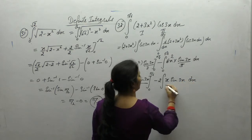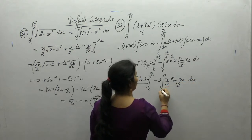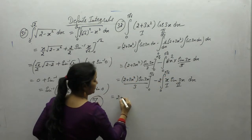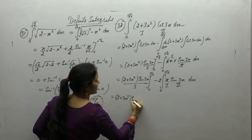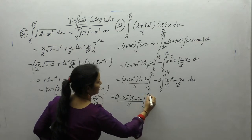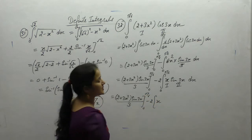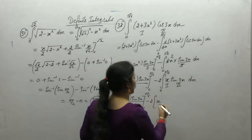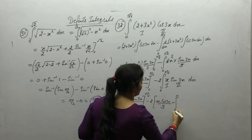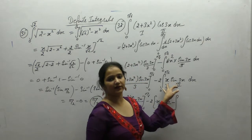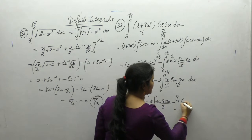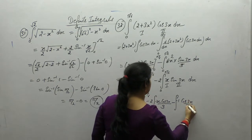Integration by parts, taking algebraic as first and trigonometric as second function: (2 + 3x²) sin(3x). First function as it is; integral of sine is minus cos(3x)/3, minus integral of derivative of first function — derivative of x is 1 — times integral of sine, which is minus cos(3x)/3.